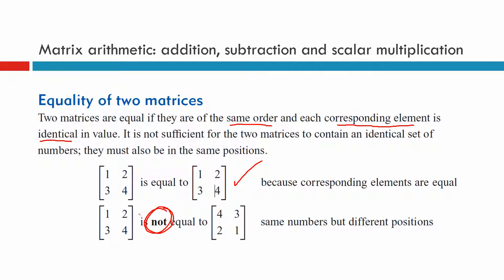You see the one underneath, 1, 2, 3, 4, and the next one's 4, 3, 2, 1, they've got the same numbers but they're not in the same positions, so these are not equal.